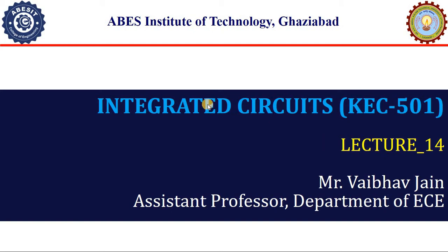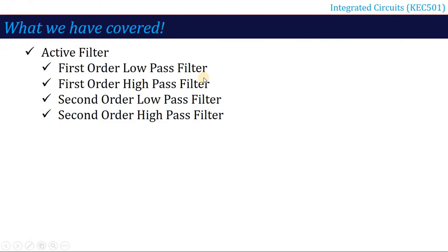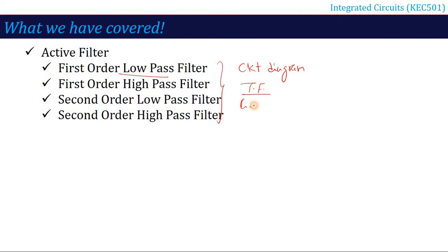In the previous lecture, we covered filters and active filters — specifically what is a low pass filter, what is a high pass filter, what is first order, second order low pass filter. We mainly covered the circuit diagram, the transfer function, and the cut-off frequency in case of both low pass and high pass filters.